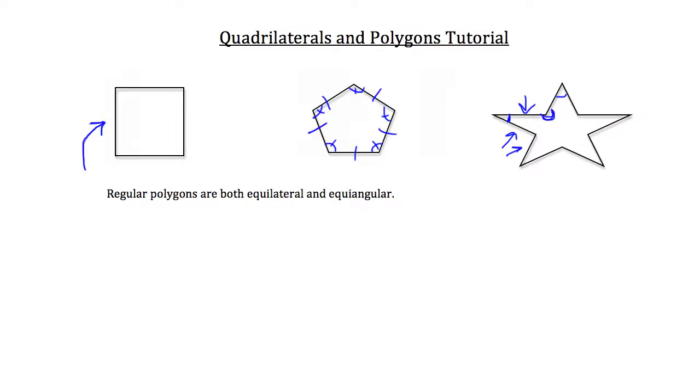You can also classify polygons by whether or not they're convex or concave. A convex polygon is any polygon that does not have a diagonal that contains points exterior to the polygon. So what does that mean exactly? Well a diagonal in any polygon is connecting one vertex to another vertex that it's not adjacent to.